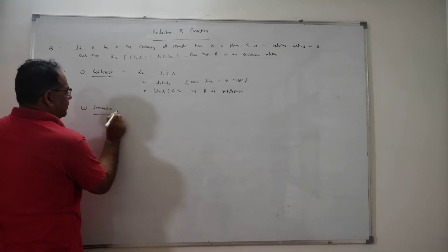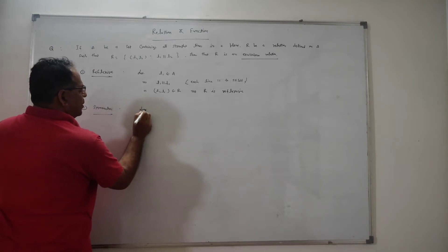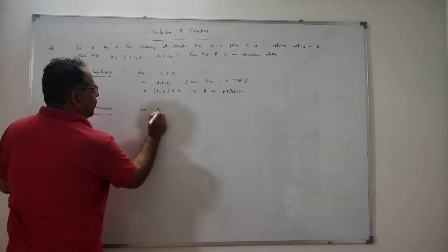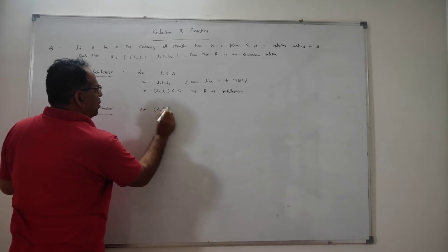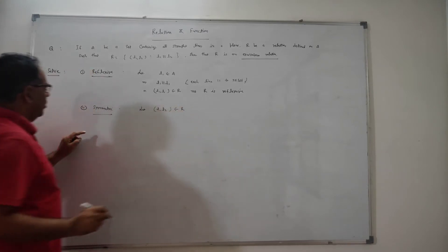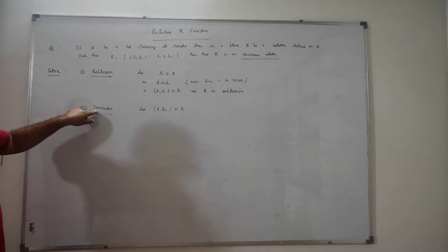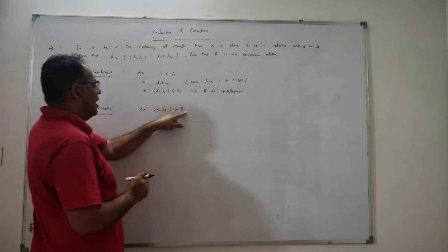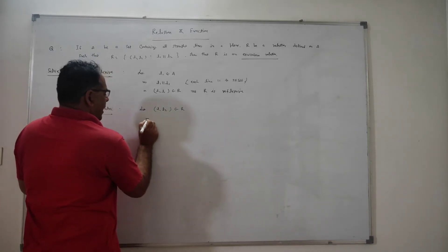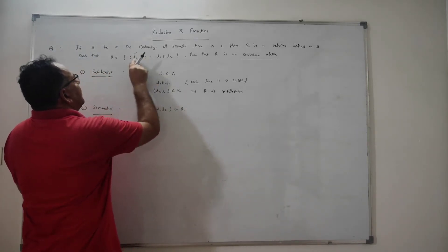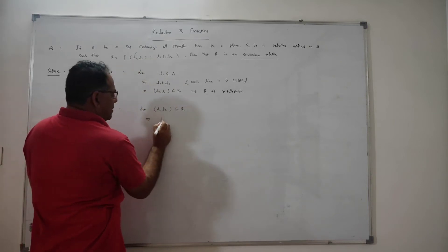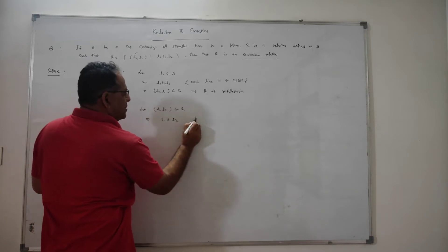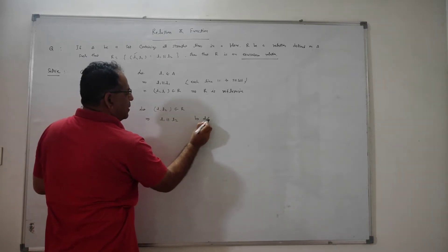Now, symmetry. Let (L1, L2) belong to R. Whenever we check if a relation is symmetric or not, we take a pair from the relation R. So (L1, L2) belongs to R. According to the definition, if (L1, L2) is an element of R, then L1 will be perpendicular to L2 by definition.